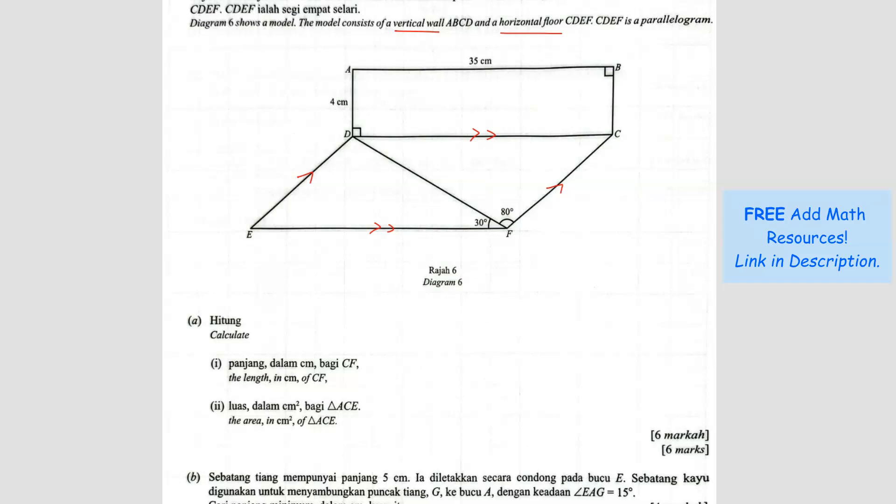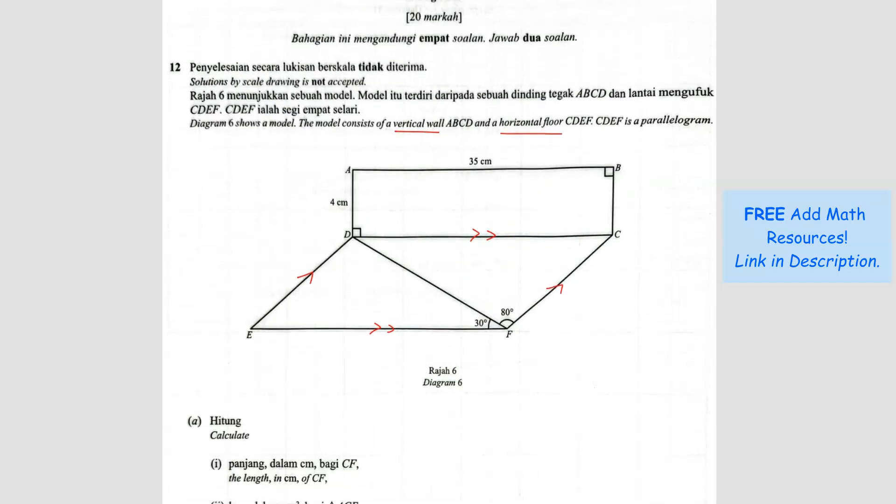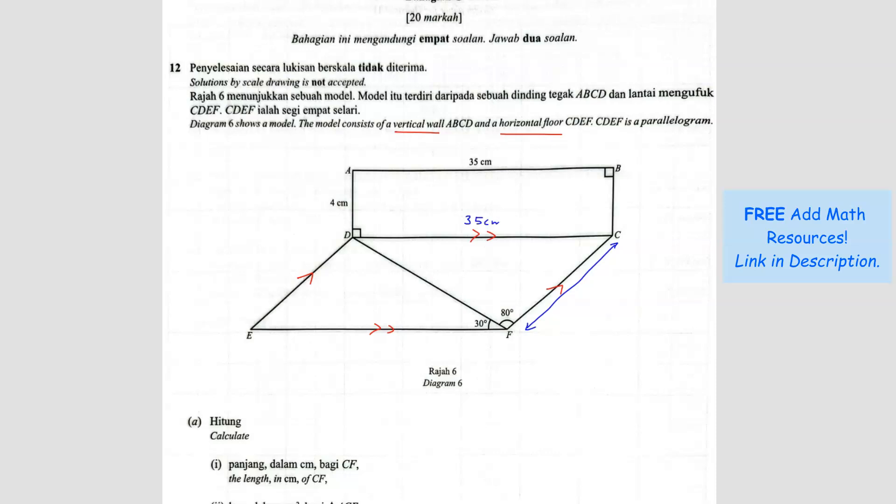Question A: Calculate the length in cm of CF. So we're looking for this length here, CF. So what can we do? Since this is 35 cm, we know this is also 35 cm. And because this is a parallelogram, we know that this 30 degree here is the same as the 30 degree here. This is also 30 degrees.